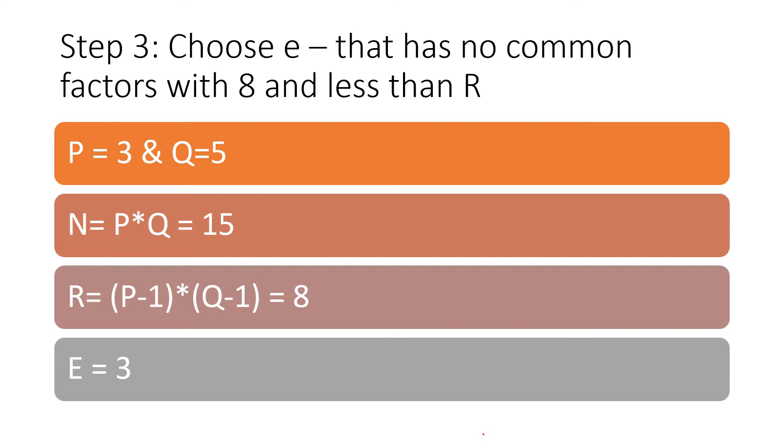Now let us find another value, that is E. E is your choice actually, you can choose any value. E is going to be our private key. So the only condition to choose E is no common factors exist with the result of R. So here the result value that we have for R is 8, so you need to choose E which has no common factors with R or 8. So the options are 3, 5, 7. It should be less than R, so you cannot go beyond 8.